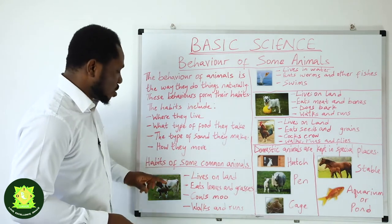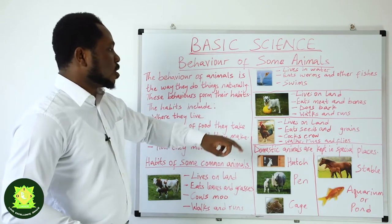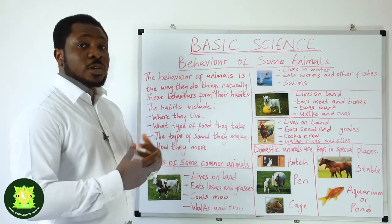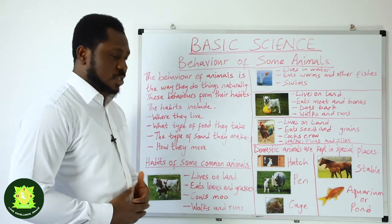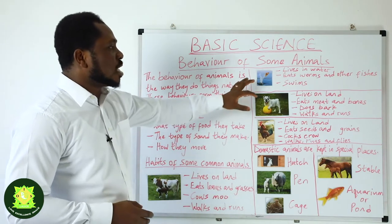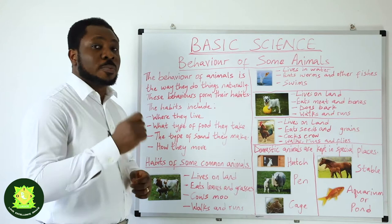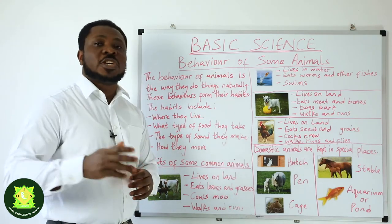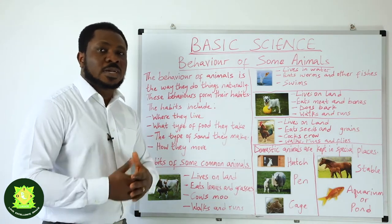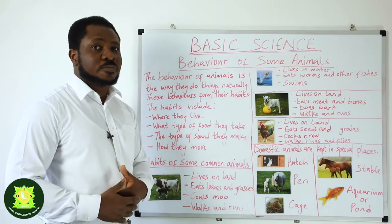So we've talked about cow, fish, dog, and cocks — we've talked about their habits and we know that these are the natural habits of these animals. However, some animals are domesticated and they are kept in special places.